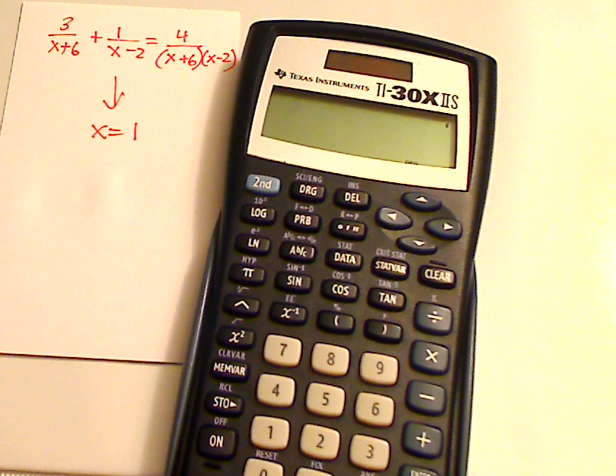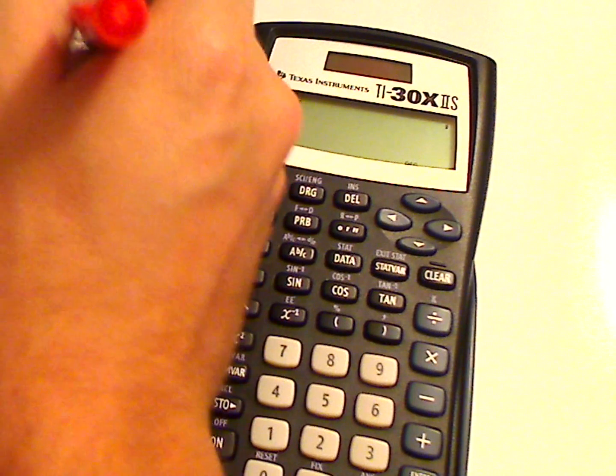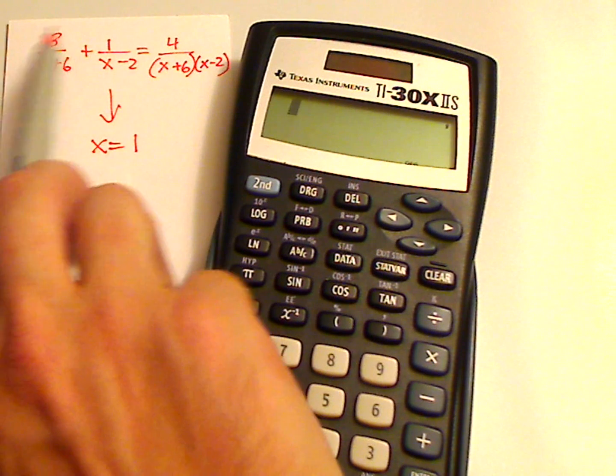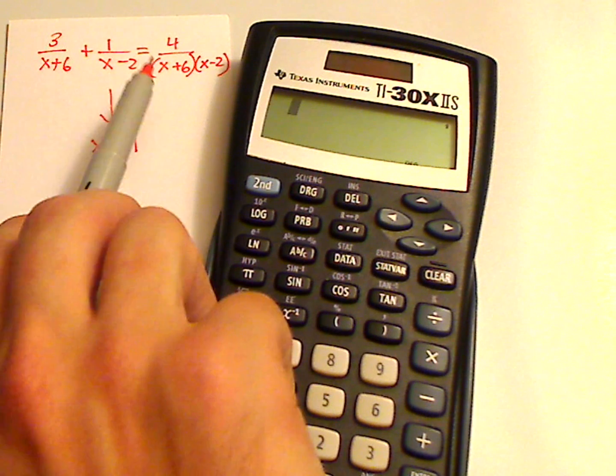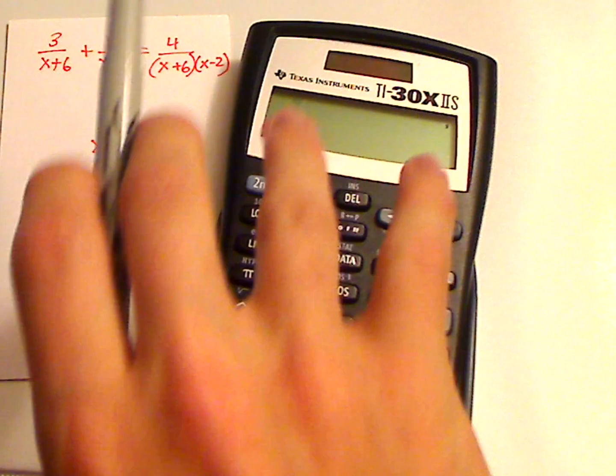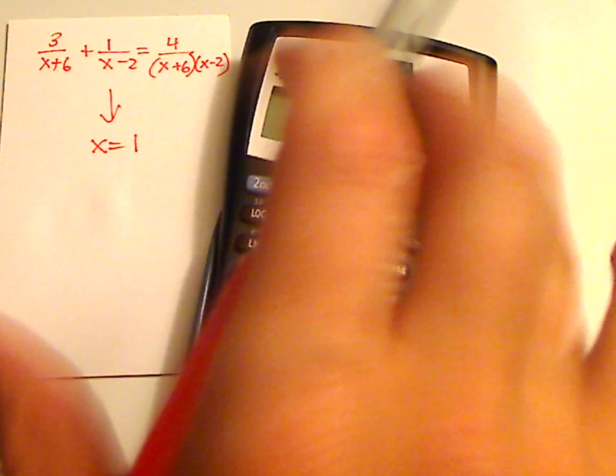Especially if you end up getting your answer and it turns out to be a fraction. When you plug that into a rational equation you have fractions within fractions, and sometimes you have x's in the numerators, x's all over the place. It's a crazy mess.